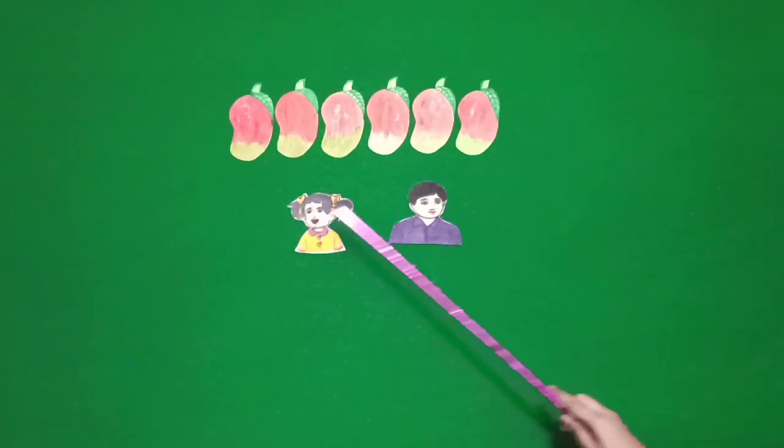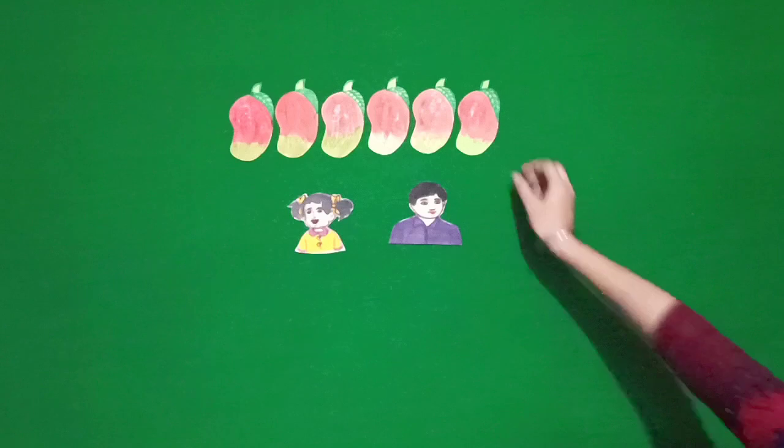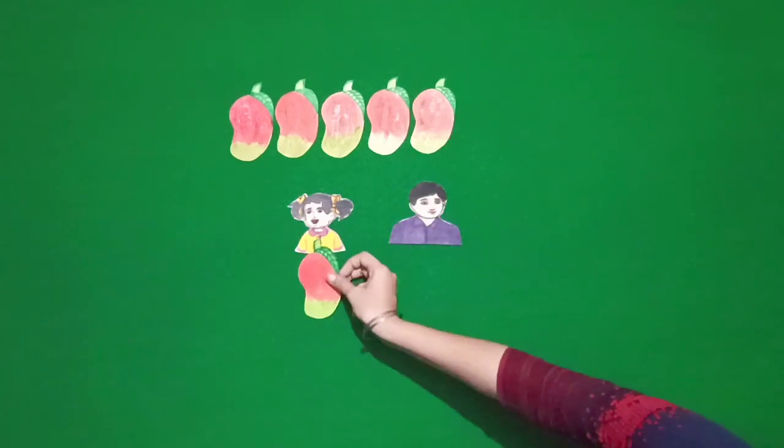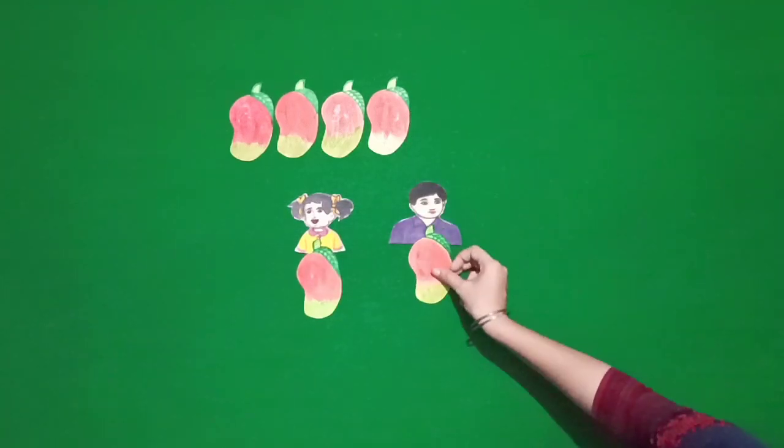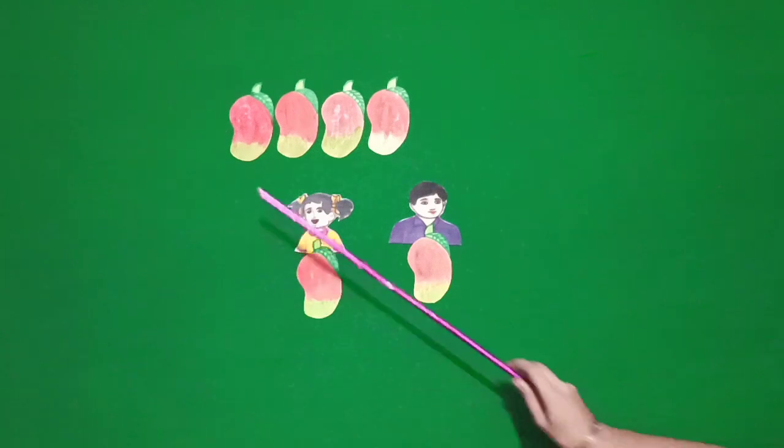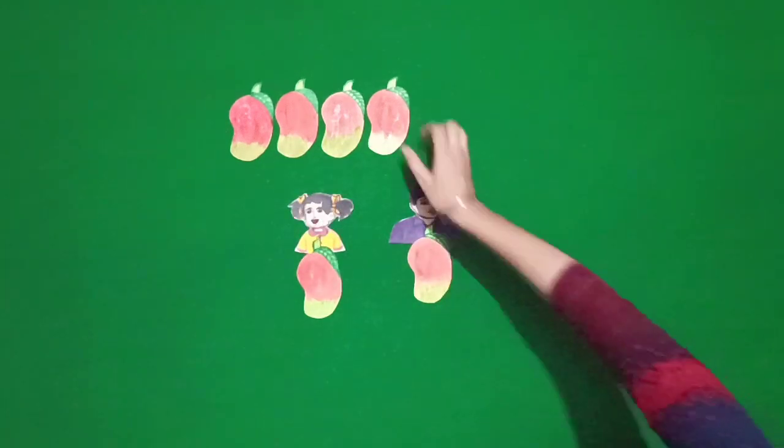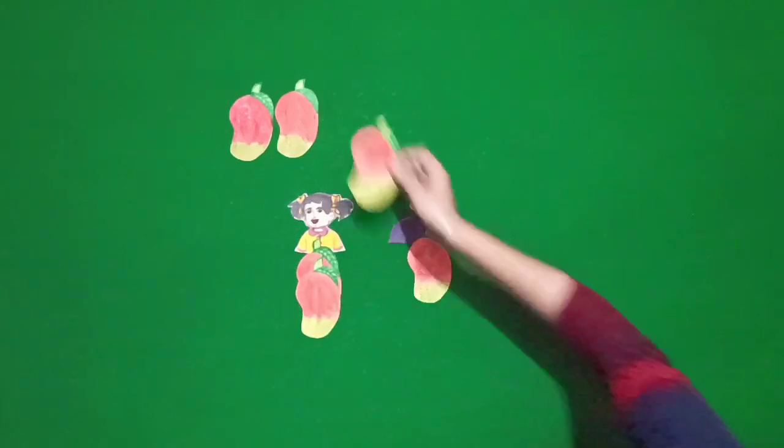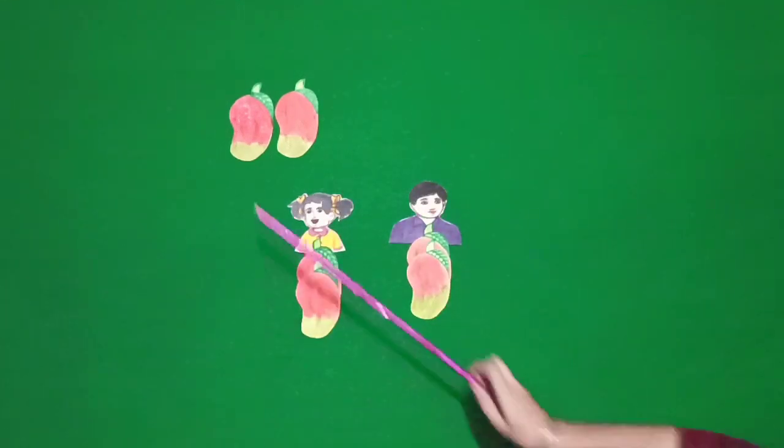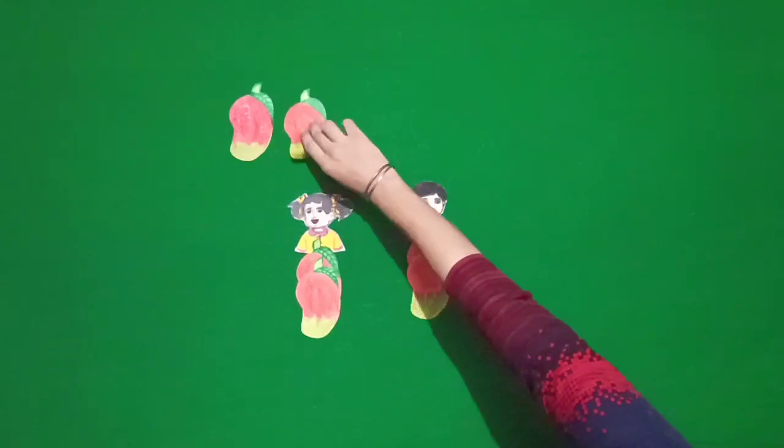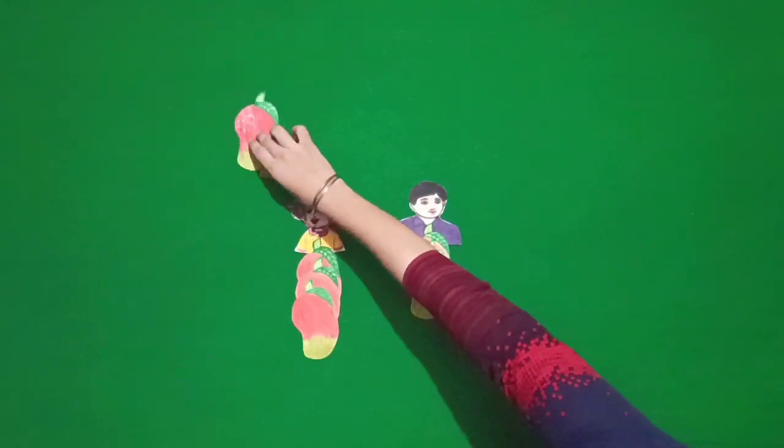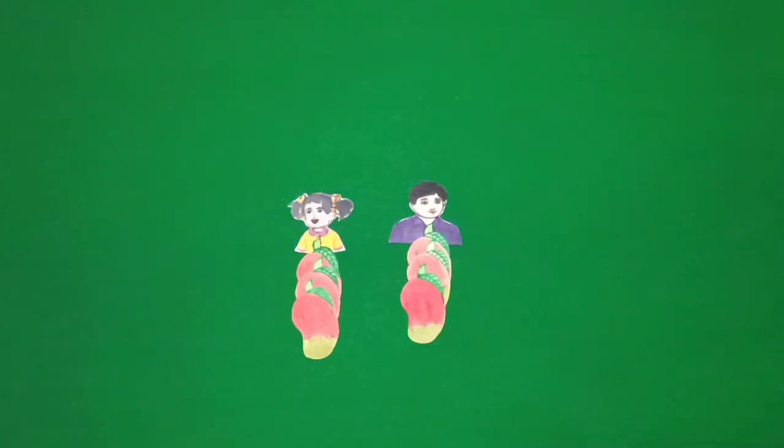First of all, we distribute 2 mangoes among 2 children. We are left with 4 mangoes. Now, we give 1 mango to each child. We are left with 2 mangoes. Now, we distribute 2 mangoes among 2 children. We are left with 0 mangoes.